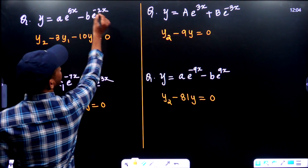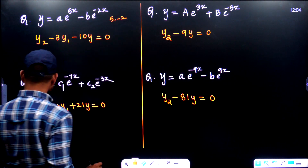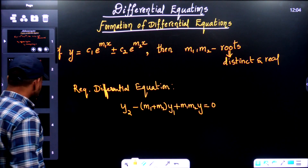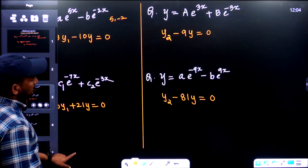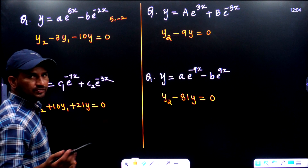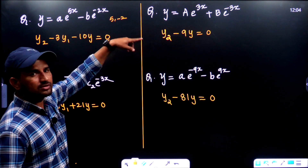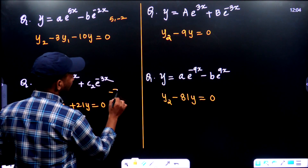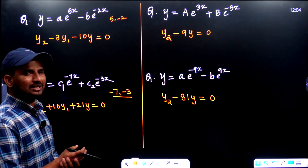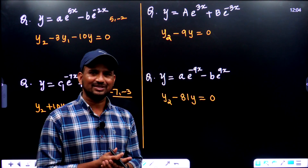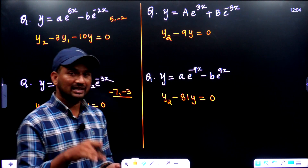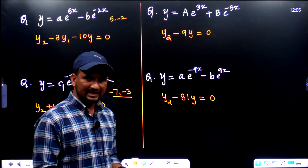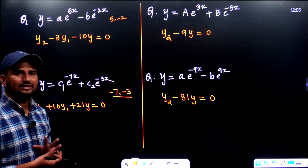Let's see more questions. If the roots are 5 and -2: summation 5 + (-2) = 3, that's why -3y1; product 5 × (-2) = -10, that's why -10y = 0. Next, roots -7 and -3: summation -7 + (-3) = -10, that's why +10y1; product (-7) × (-3) = 21, so +21y = 0.